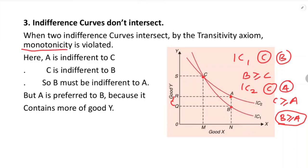So B is indifferent to A, and A is indifferent to B — both give the same satisfaction. This leads to a contradiction because it violates the monotonicity assumption. Therefore, indifference curves cannot intersect.